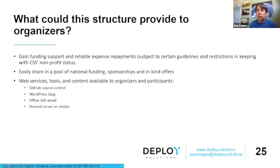What could this structure provide to organizers? The ability to gain funding support and reliable expense repayments, sharing in a pool of national funding, sponsorship, and in-kind offers. Having access to web services, tools, and standardized content that's available would really go a long way to reducing the burden that we have as organizers every time we try to do one of these events. So I'm basically recommending a confederated model organized around the Canadian Space Society with involvement from the Canadian Space Agency and other organizations to provide more national capacity for Space Apps in Canada over a long period of time.